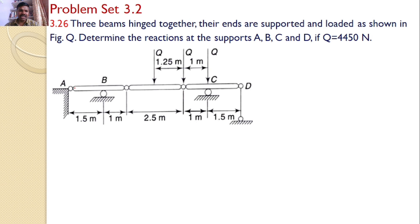There are three beams: A-B, B-C, and C-D. These are supported at A, at B, at C, and there are also roller supports. Our interest is to find the reactions at A, B, C, and D.